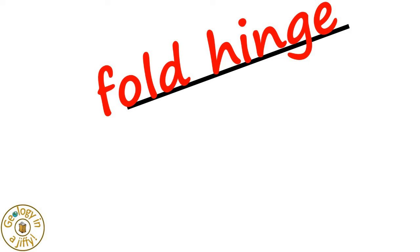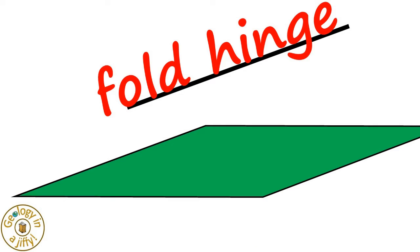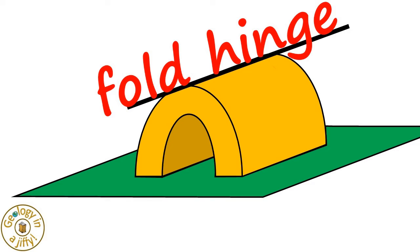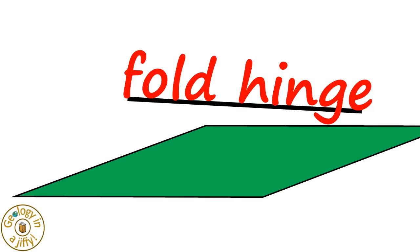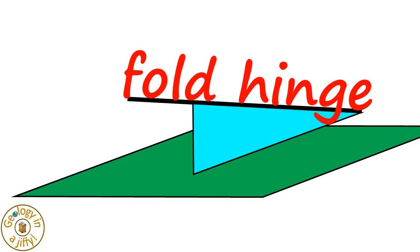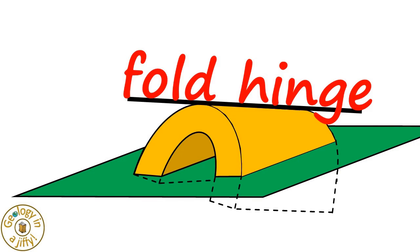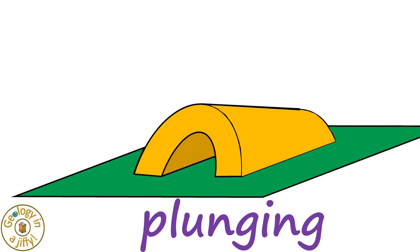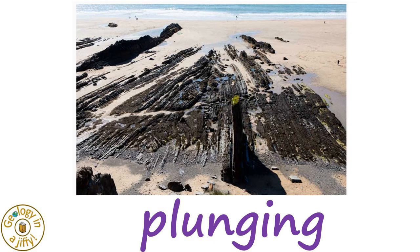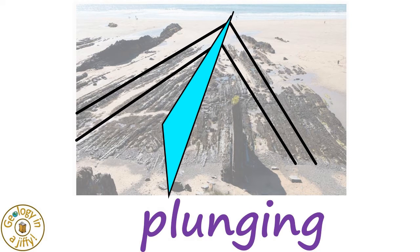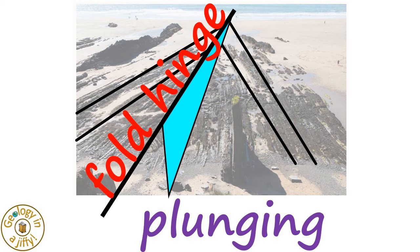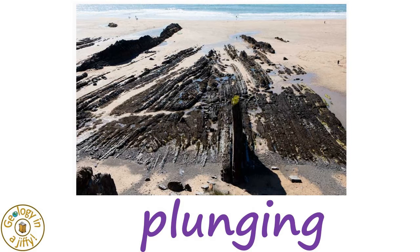When we compare the fold hinge in relation to the horizontal ground surface, if the fold hinge is parallel to the ground we say the fold is non-plunging. If the fold hinge is not parallel to the ground we say the fold is plunging, as the seaward plunging anticline in Cornwall, England demonstrates — the hinge line dipping away from the land, angled down towards the sea.